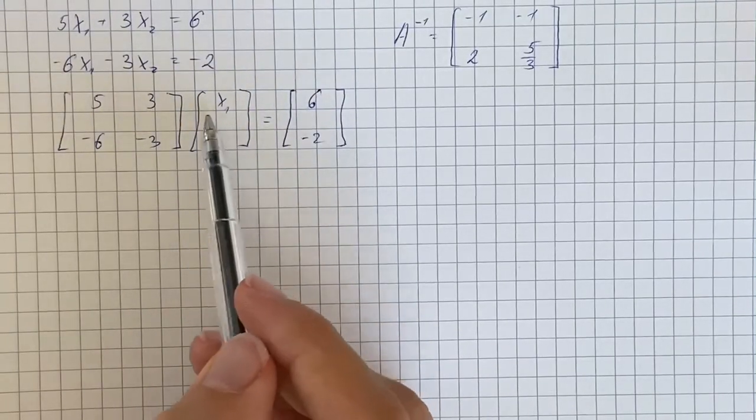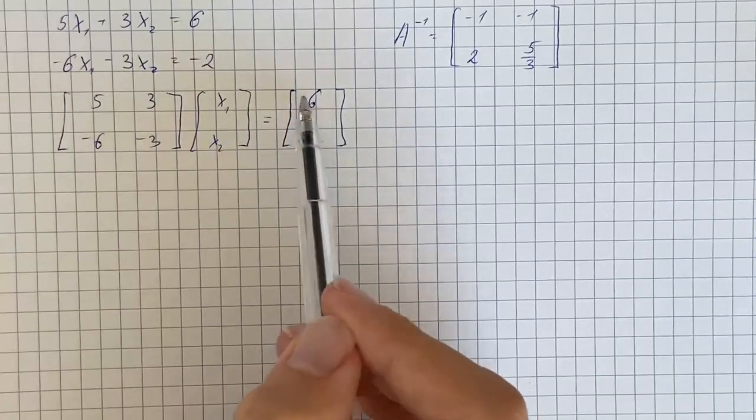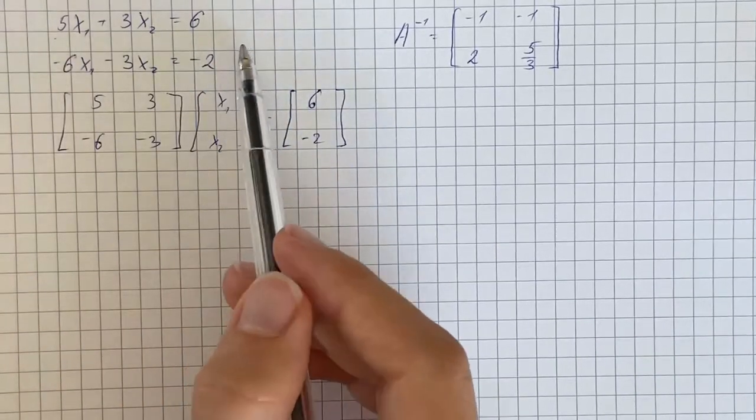If we multiply these two matrices we get 5x1 + 3x2 = 6, so that's clearly the same.